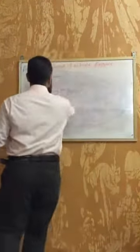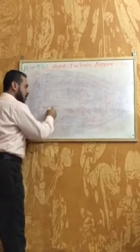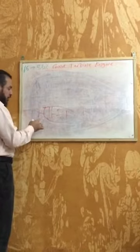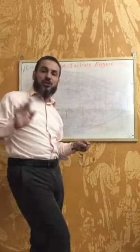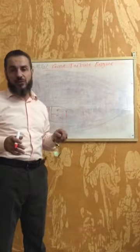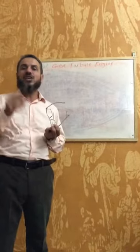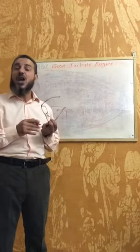The turboprop engine is a gas turbine engine with a compressor, combustion chamber, and turbine, but it has a large reduction gearbox in front to increase torque and decrease the output shaft speed, connected to a propeller at the wing or nose. The burned gases produce only about 10 percent of thrust, while 90 percent of thrust comes from the propeller.